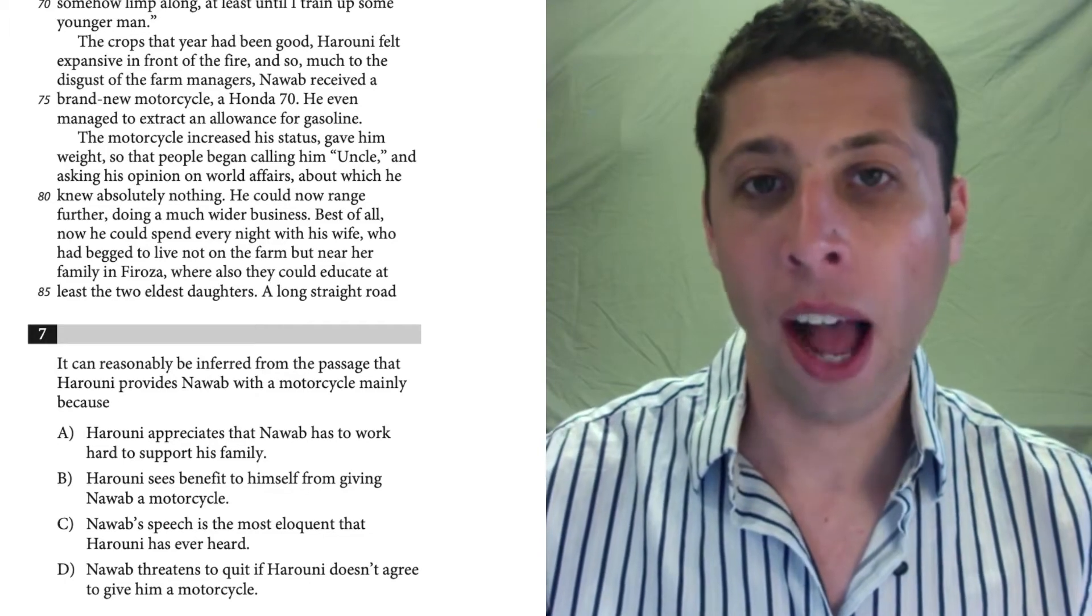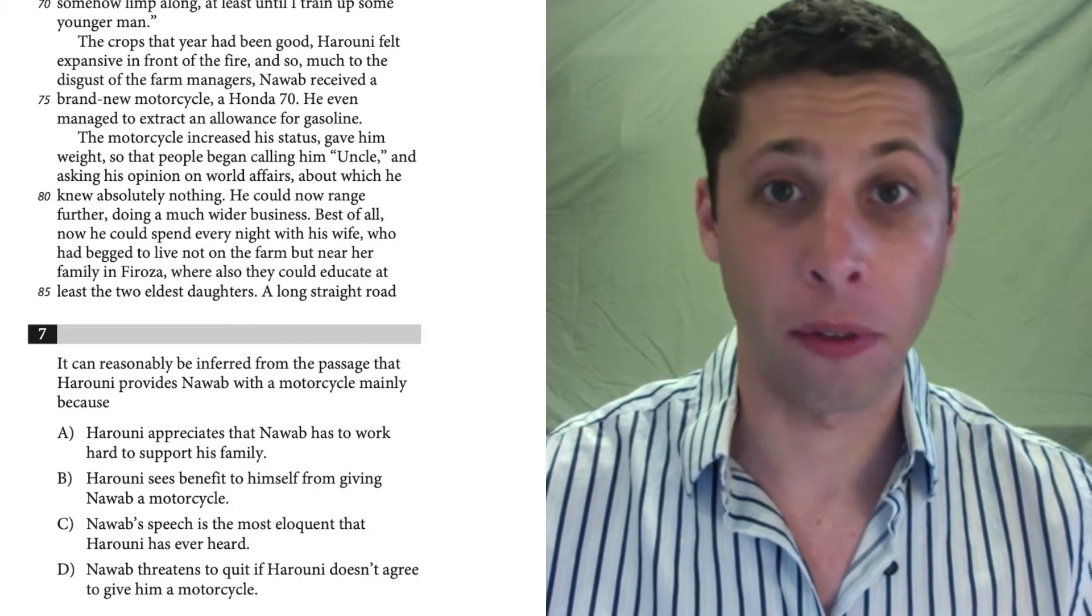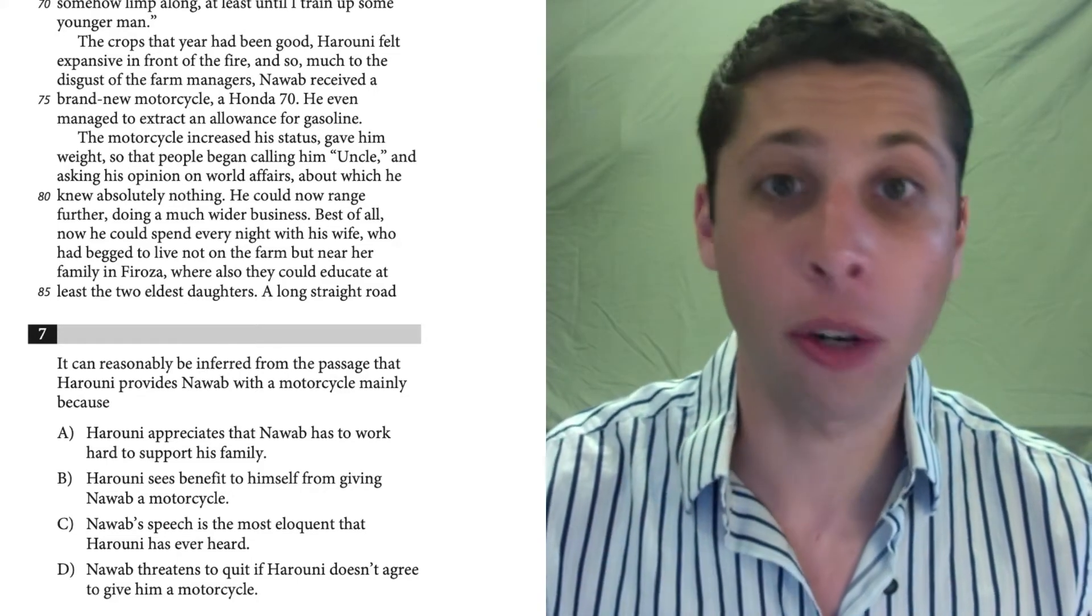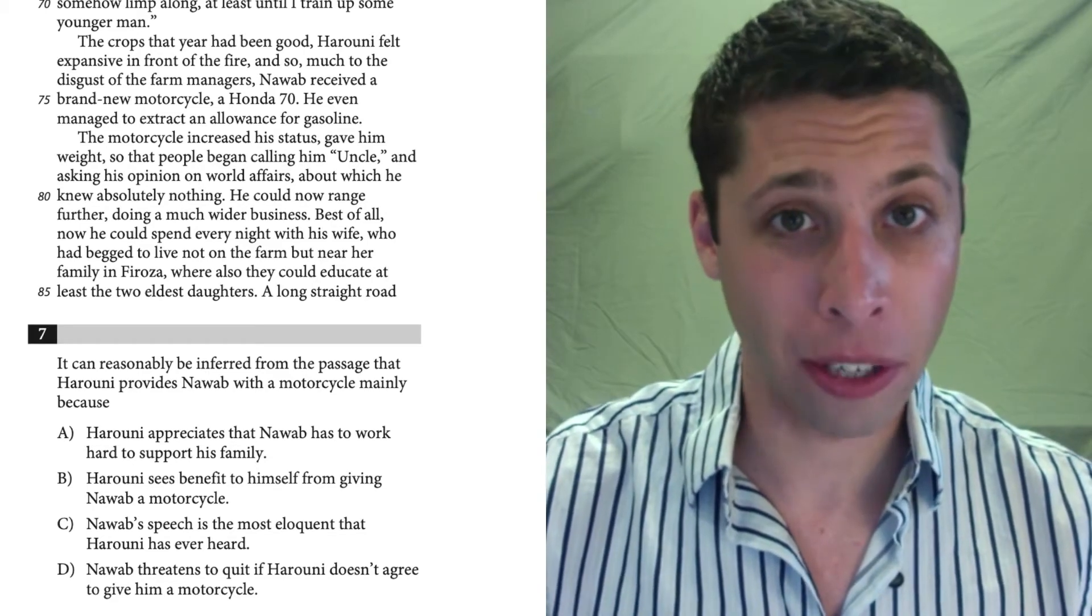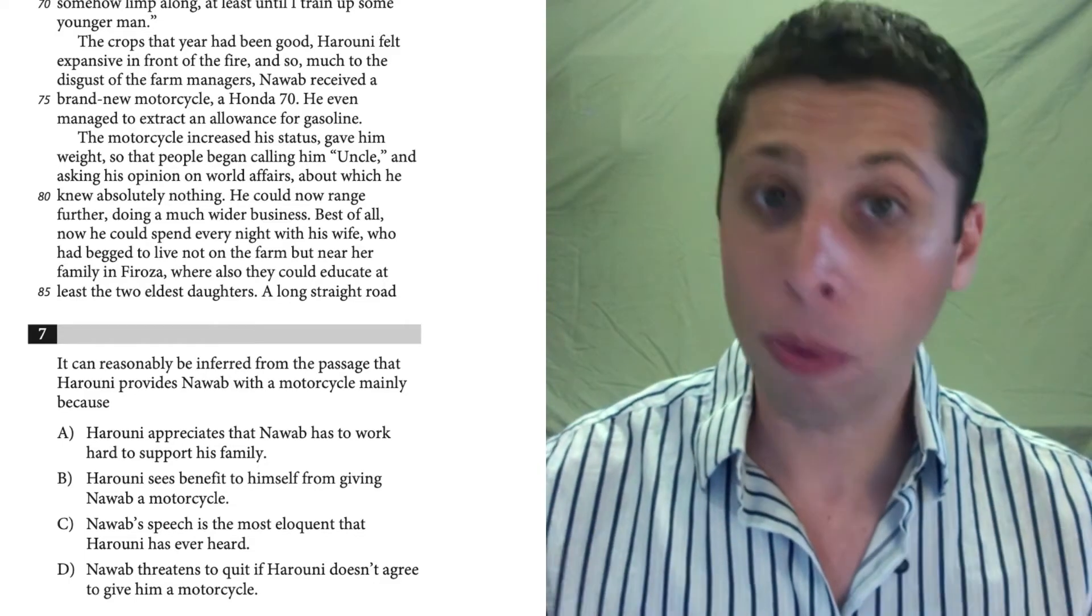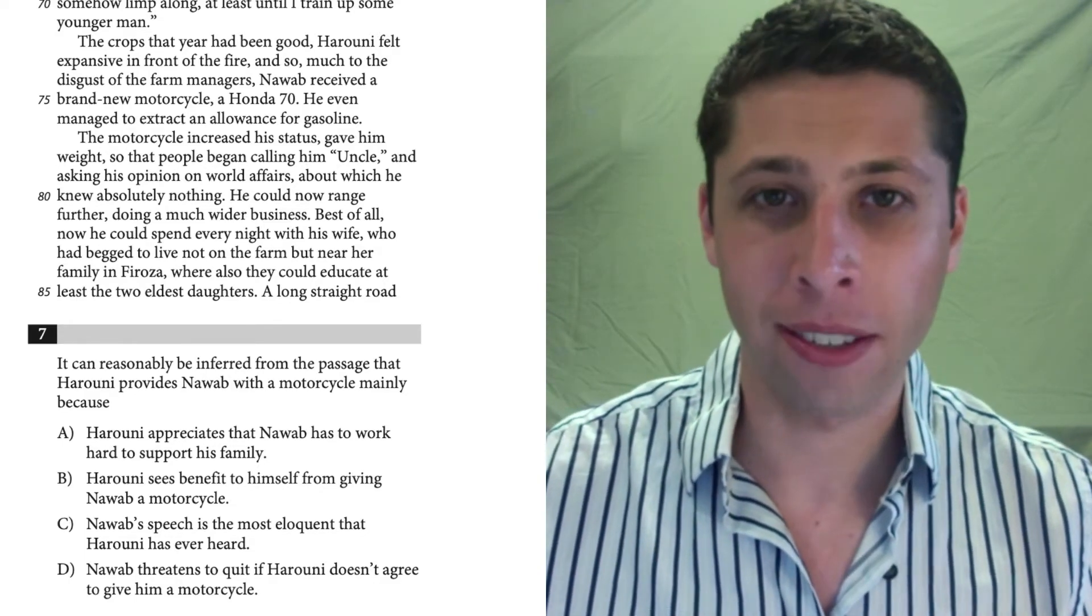With number seven, I would normally encounter a problem with my reading strategy. Remember, my reading strategy is that I do not read the passages. I go directly to the questions and start answering. Now there are places where that's going to be difficult. Most of the time I'm going to have a line reference, but for number seven, I don't have a line reference. So what do I do? How do I handle that annoyance?